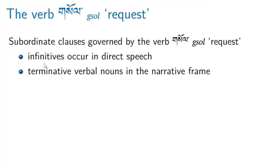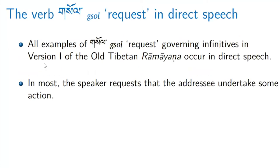In the Old Tibetan Ramayana, infinitives occur in direct speech, and terminative verbal nouns occur in the narrative frame. There are about five different manuscripts — I'm not going to go into the manuscriptology. Basically there are two versions of the Old Tibetan Ramayana, and I only read version one, because it's the older one. We historical linguists like to read old things.